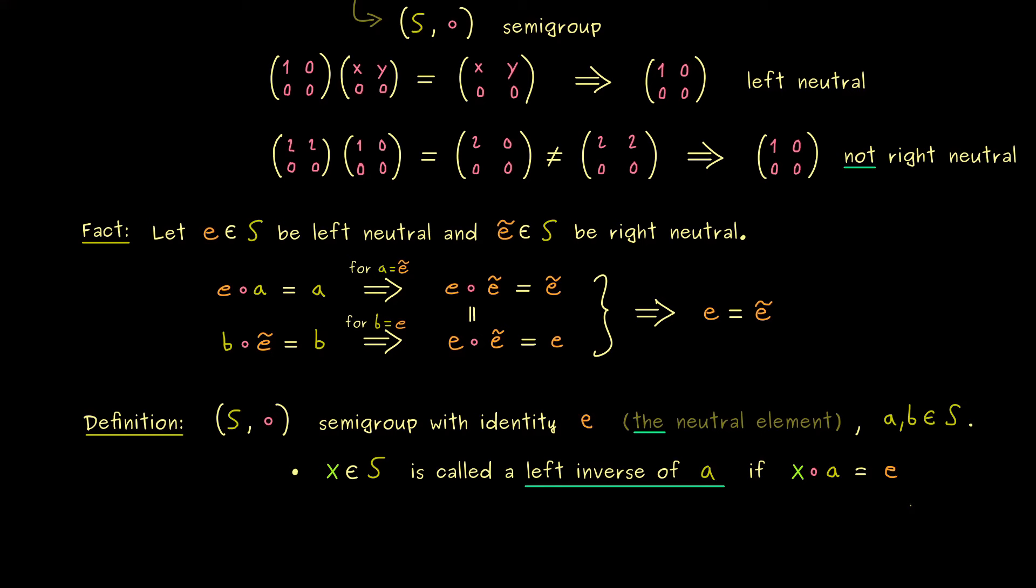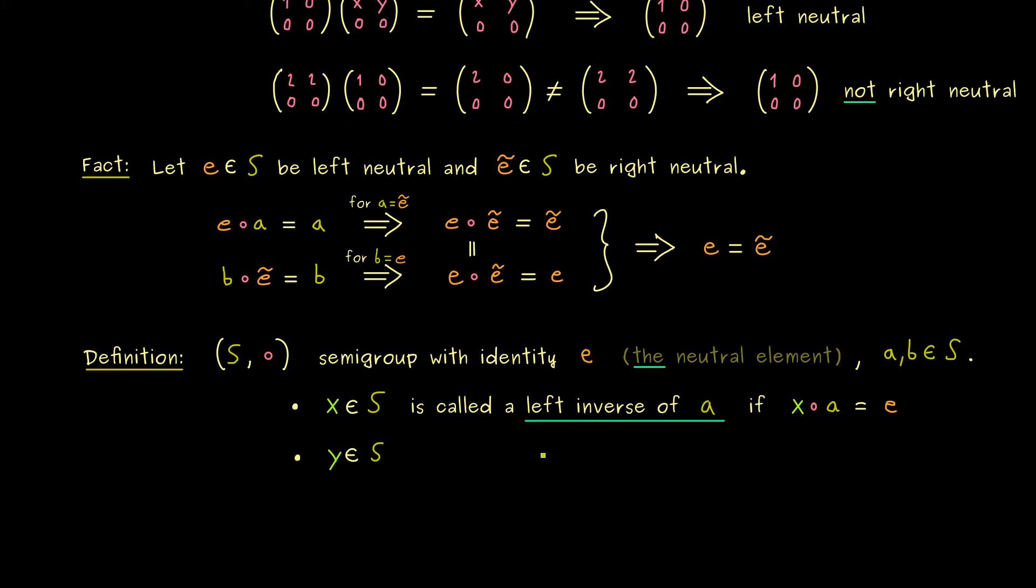However the important ingredient here again is that you put X from the left to A. Because if you do it from the other side we would speak of a right inverse. And this is the next definition. Y in S is called a right inverse of B if B circle Y is equal to E.